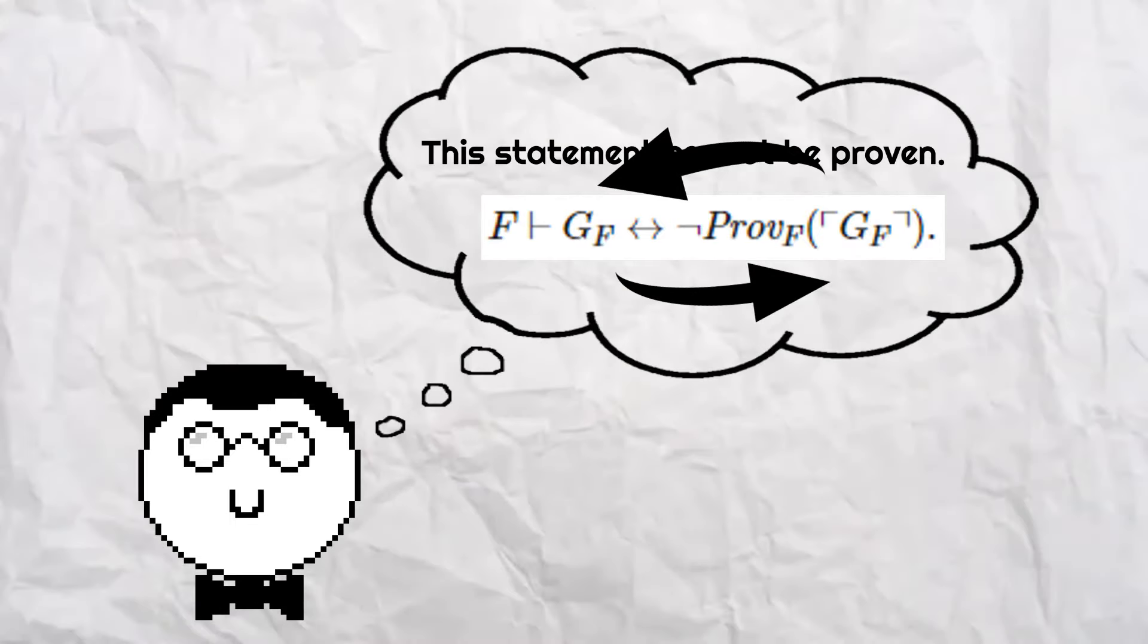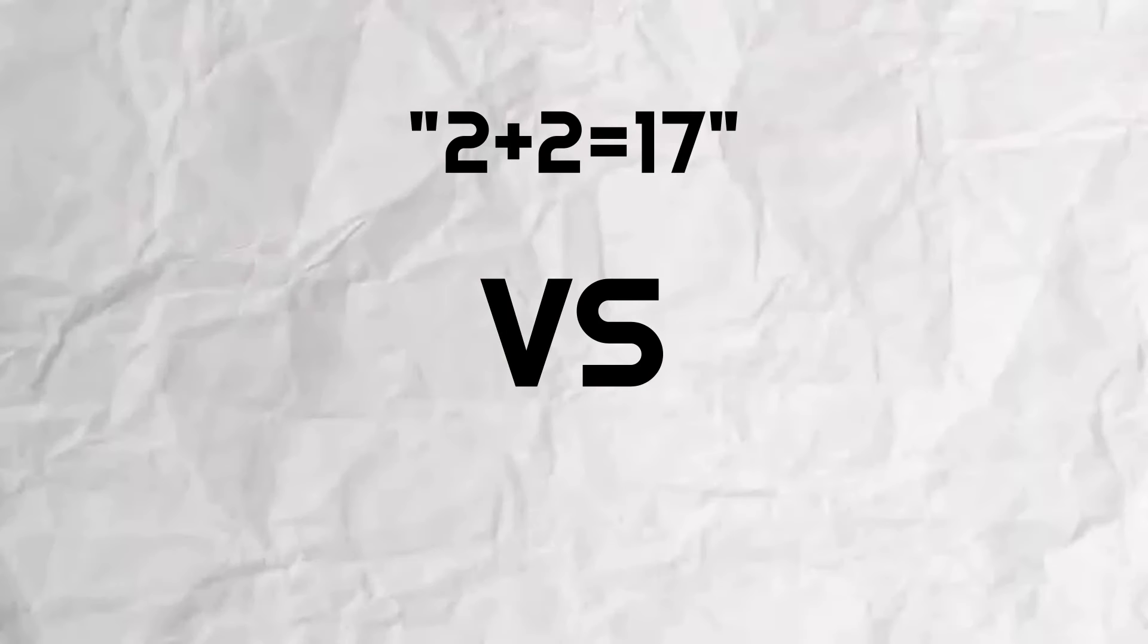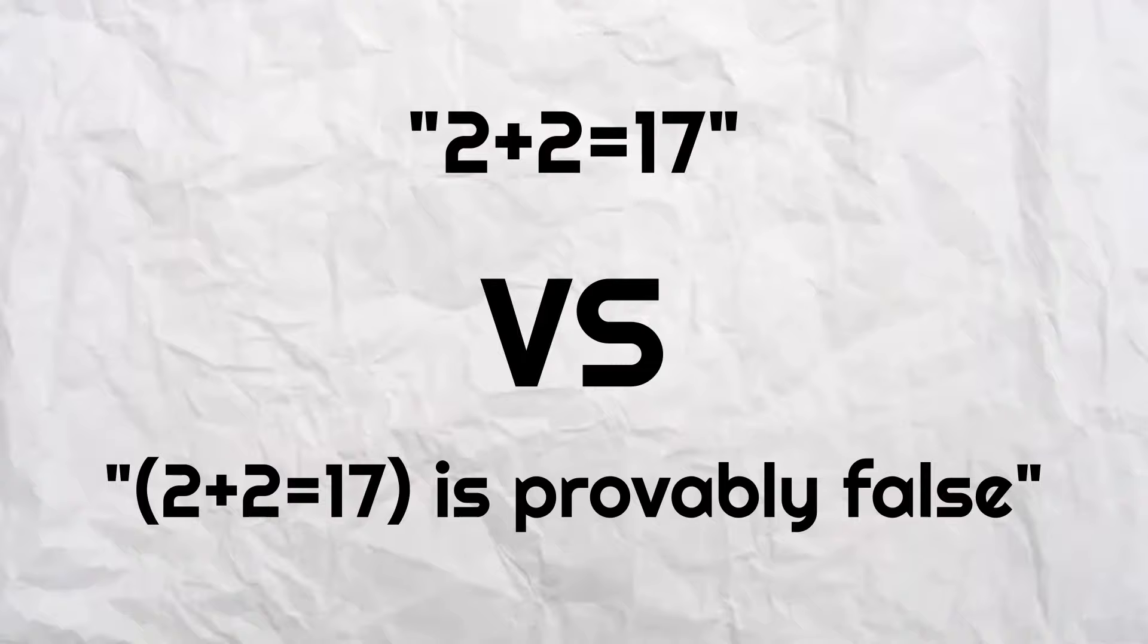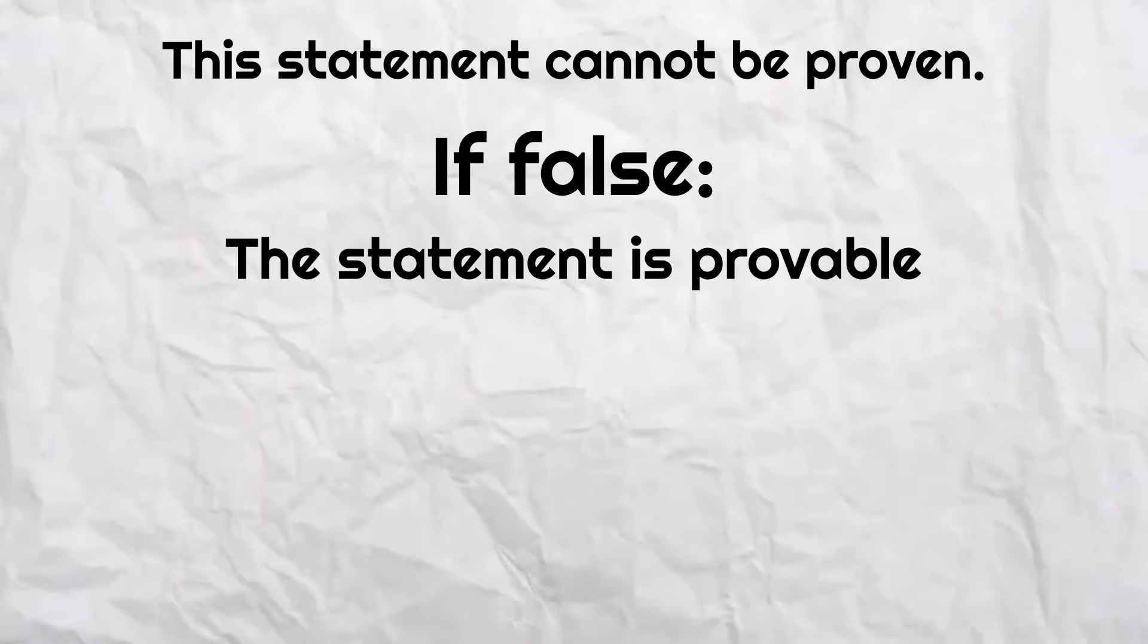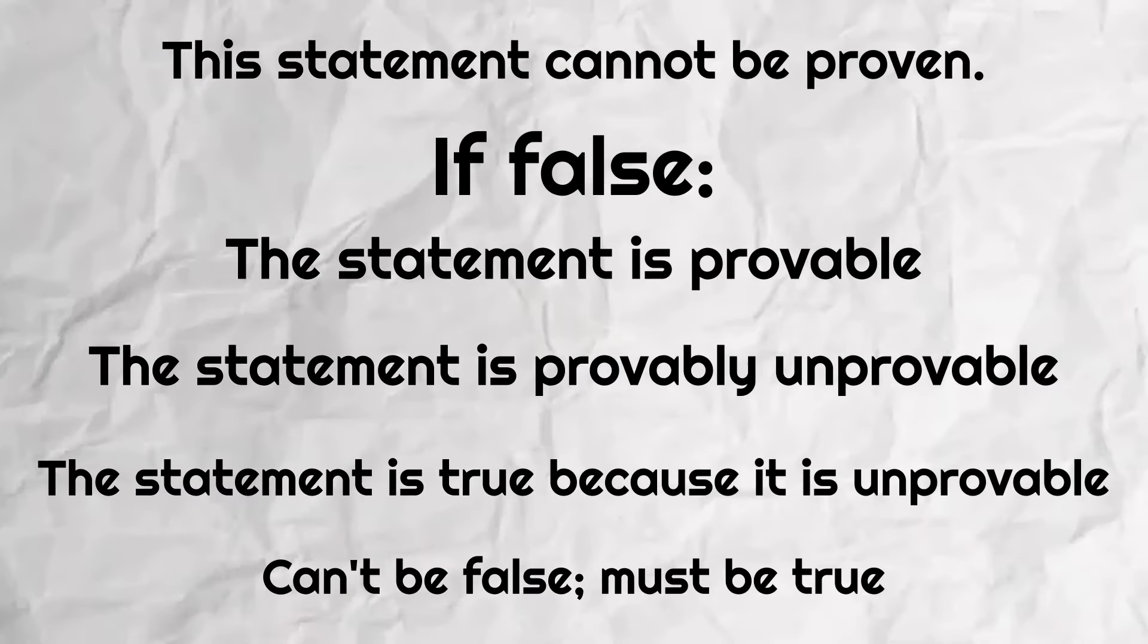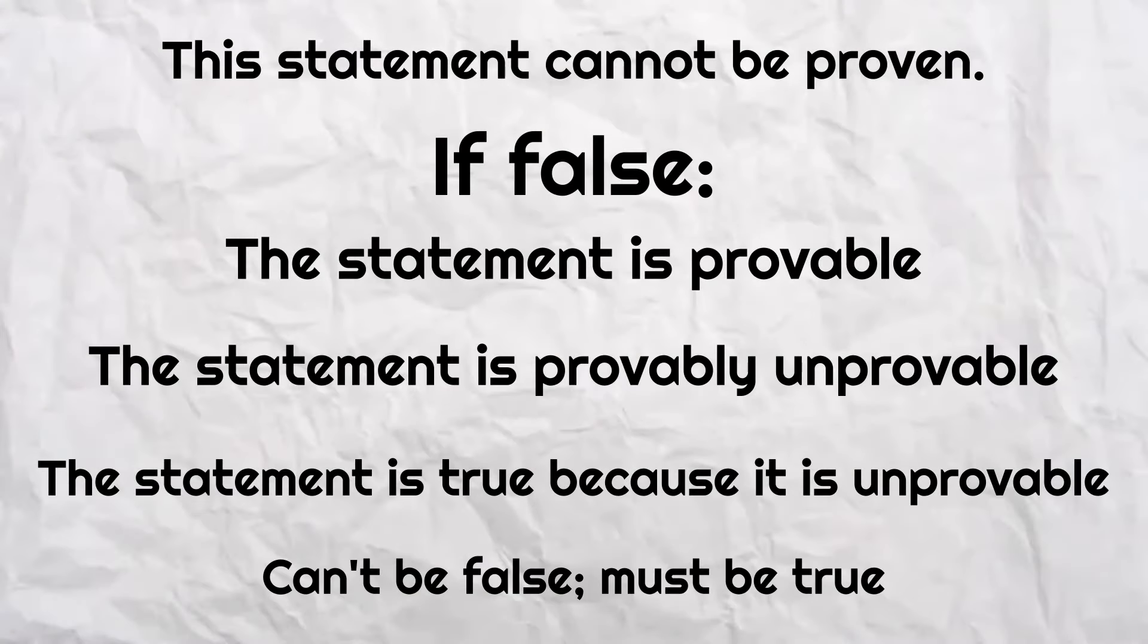This is possible because it's not a statement of mathematics, but rather a statement about mathematics that uses the symbols of the system. Because the statement can't be false and its Gödel number does not correspond in any way to that of any of the axioms, it is both true and unprovable.